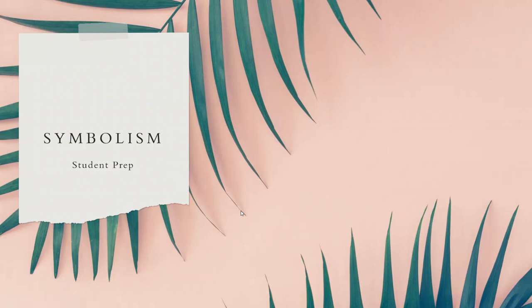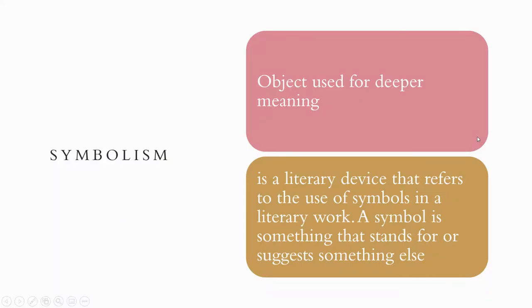Symbolism is what we're going to talk about today and its effects in all works of art, from poetry to novels to artwork itself. Symbolism is an object used for deeper meaning. It's a literary device that refers to the use of symbols in a literary work. A symbol is something that stands for or suggests something else — representing something greater than just what it is.